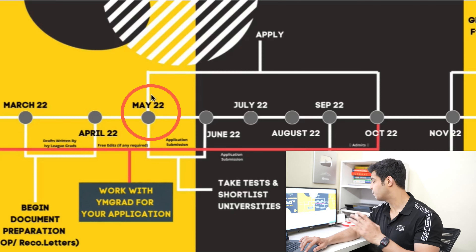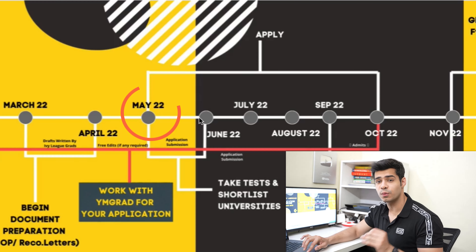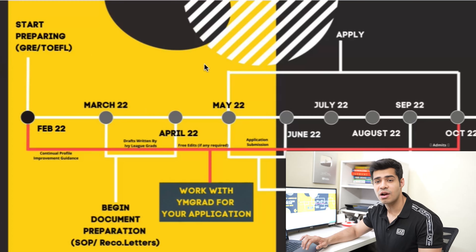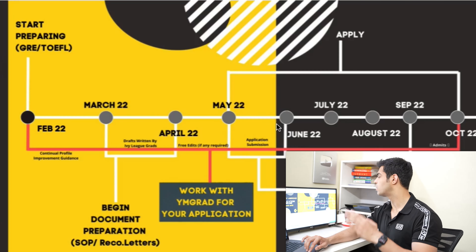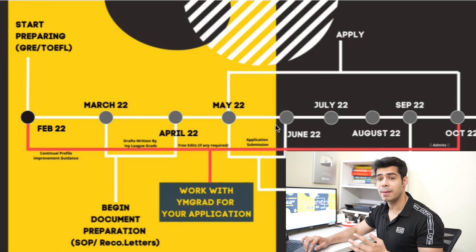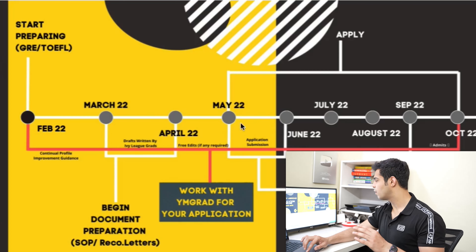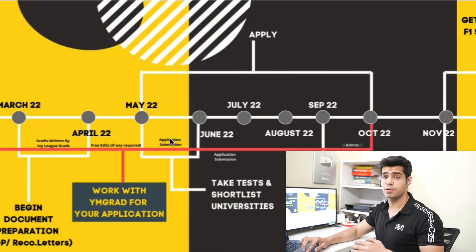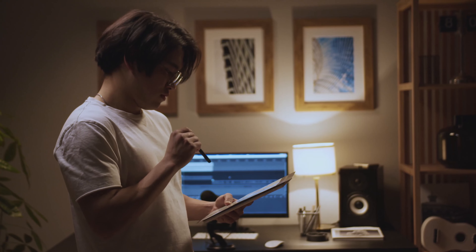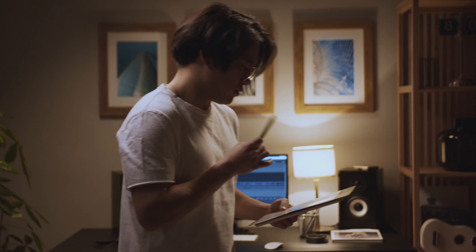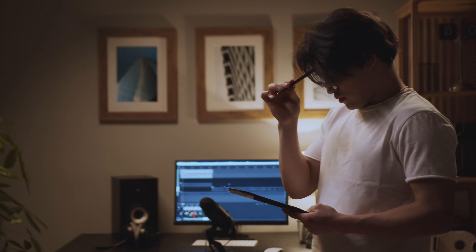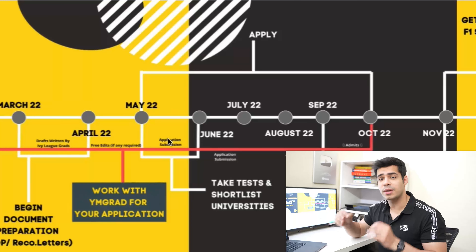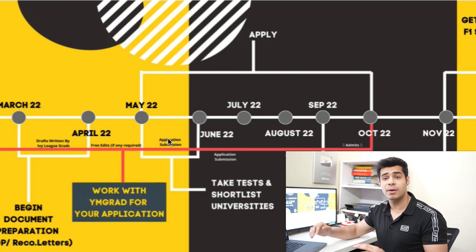By May 2022, or maximum June 2022, you want to be done with your standardized tests — GRE, TOEFL, GMAT, SAT, ACT. June is the absolute maximum; don't extend beyond that because you need to be ready for applications. By end of June, you should also have your university shortlist finalized. Choosing the right set of universities is the most paramount step — if you choose the wrong ones, you're wasting your time.